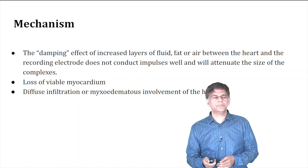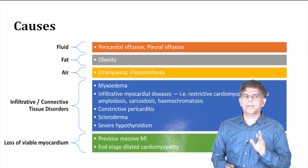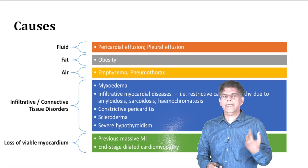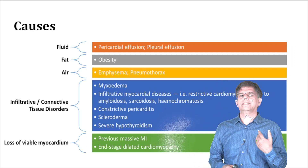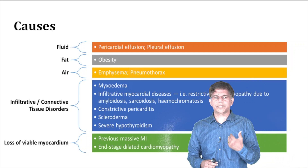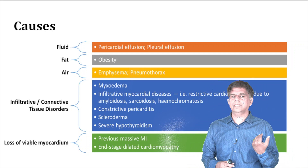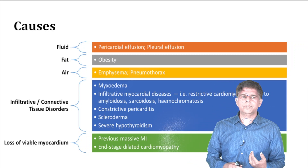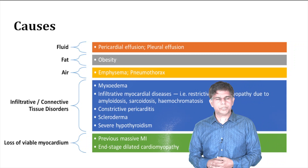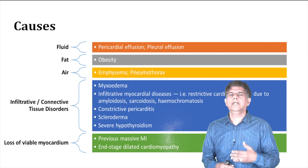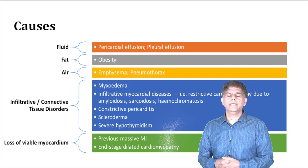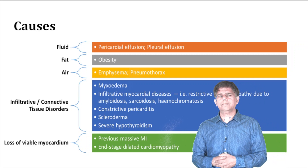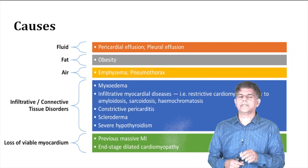The causes of low voltage can be grouped by category: fluid — pericardial effusion, pleural effusion; fat — obesity; air — emphysema or pneumothorax. Infiltrating conditions are important causes: myxedema, restrictive cardiomyopathy due to amyloidosis, sarcoidosis, and hemochromatosis. Severe hypothyroidism should also be considered. Loss of viable myocardium — particularly with massive MI or end-stage dilated cardiomyopathy — is another significant cause.